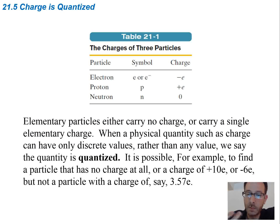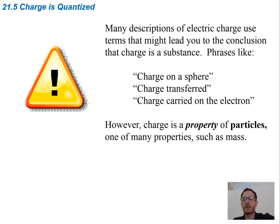So if you were talking about a proton, you're going to have a positive e. If you're talking about an electron, you would have a negative e. And then the charge on a neutron is going to be zero. So elementary particles either carry no charge, a single charge, or a single elementary charge. When a physical quantity such as charge can have discrete values, we say that it's quantized. It's also possible, for example, to find the particle has no charge at all, or 10e, negative 6e. But we can't have a decimal in front of the e. So it needs to be an integer amount of charge. So many descriptions of electric charge use terms that might lead to a little bit of confusion. So phrases like charge on a sphere, or charge transferred, charge carried on an electron. However, charge is a property of the particle, one of the many properties such as mass. So not to be confused.